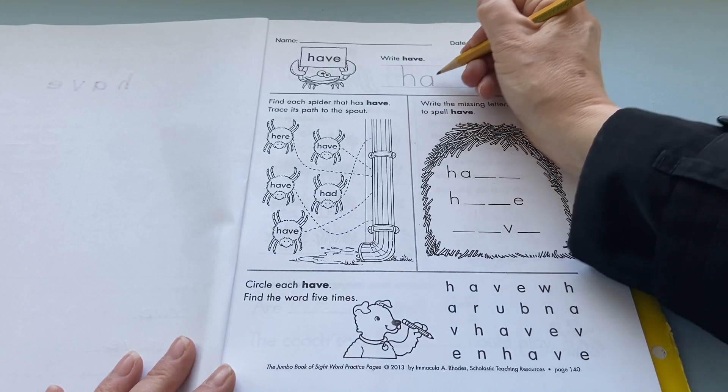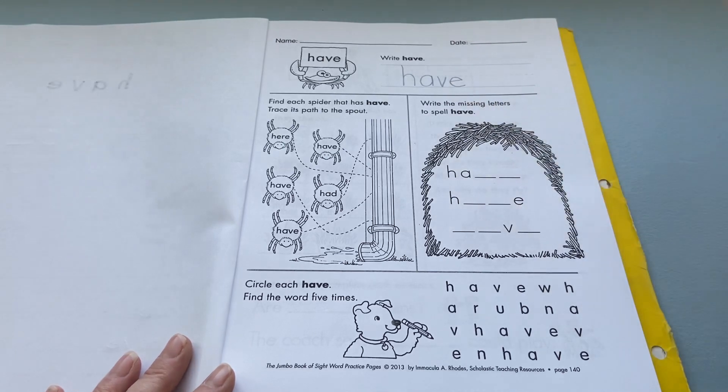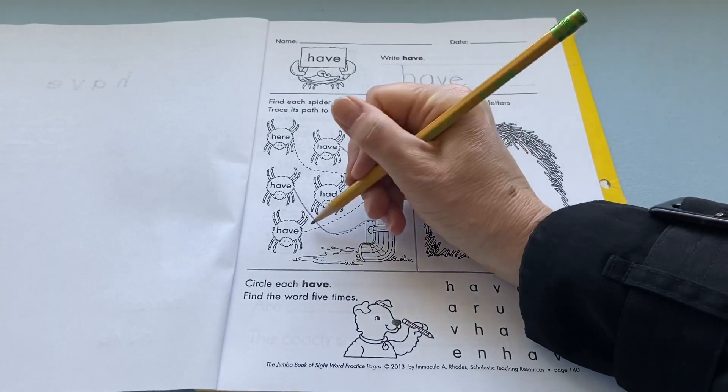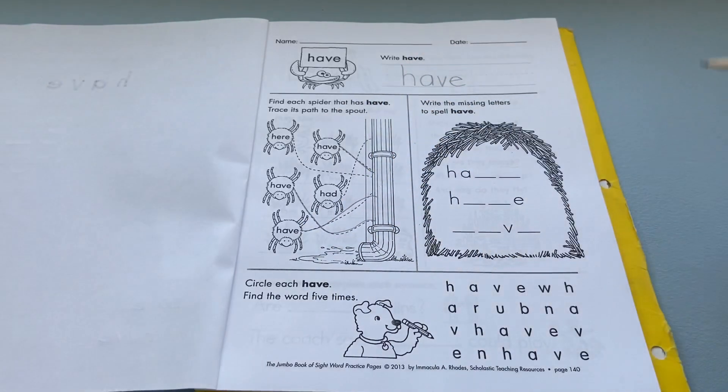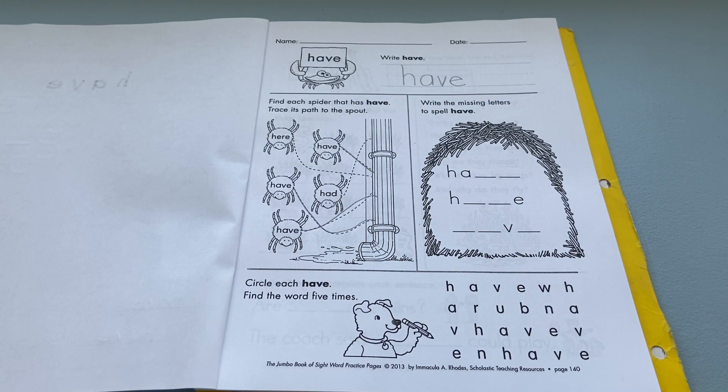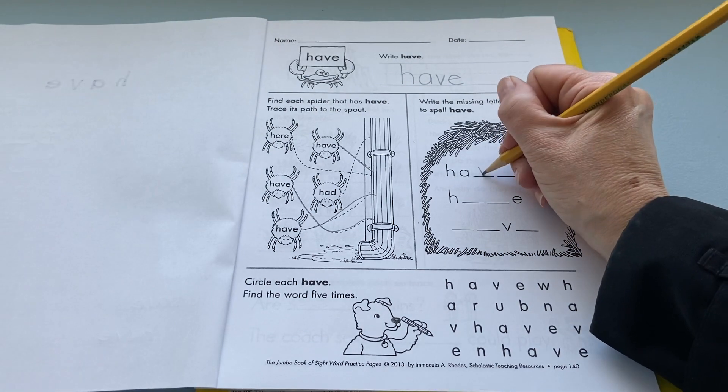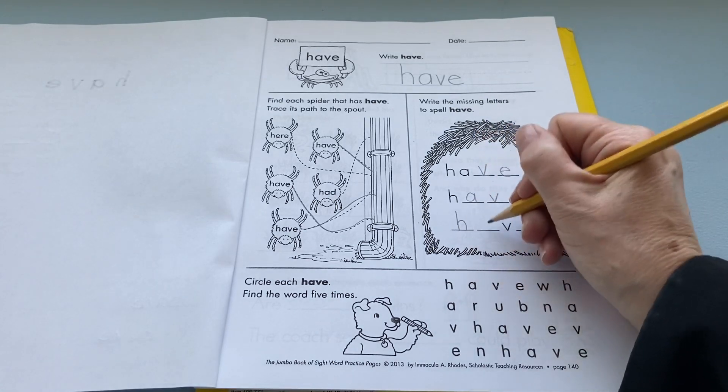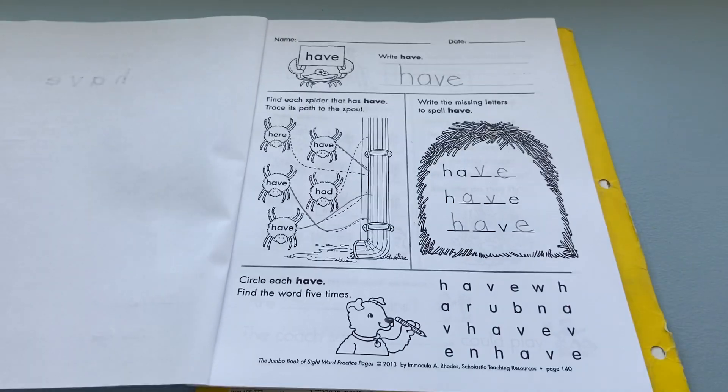You're writing 'have' all by yourself with your pencil just one time. Now find each spider that has the word 'have' on it and then trace its path to the water spout. Over here you're going to put in the missing letters for 'have'.